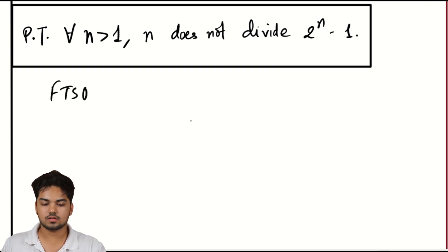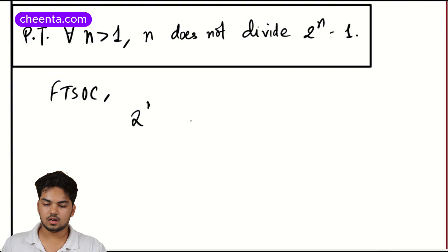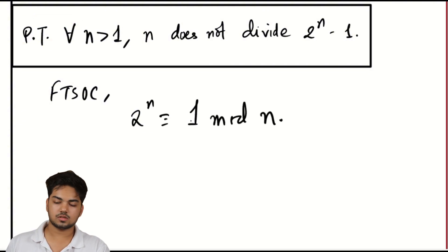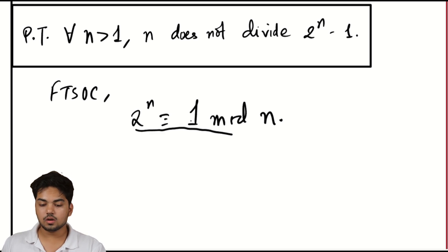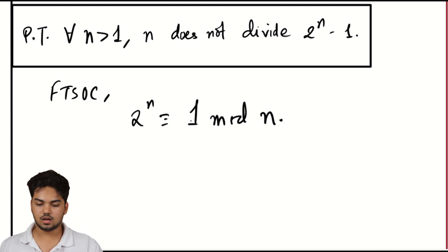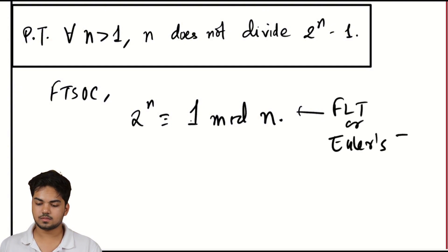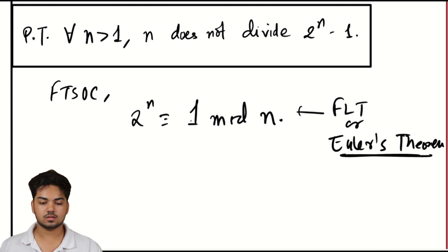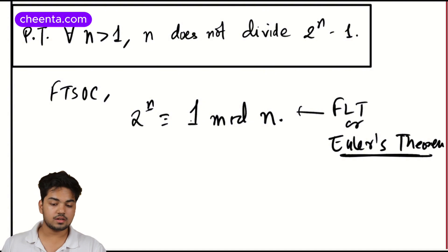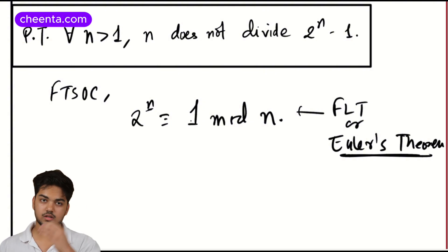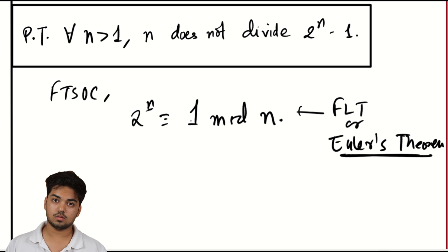If you argue by contradiction, you're looking at a statement that is connected to Fermat's little theorem or Euler's theorem. Since n is not necessarily a prime, you really are just looking at Euler's theorem. These are statements about powers of 2 mod n, so that's where Euler's theorem can help you out — it provides something to hold on to. But to apply Euler's theorem, you first have to make sure the number you're taking a power of and your modulus are coprime.